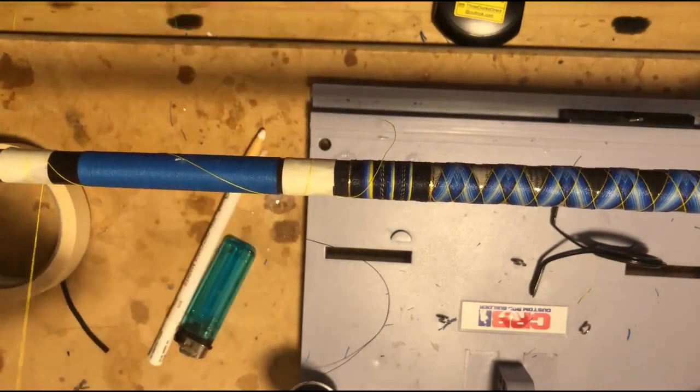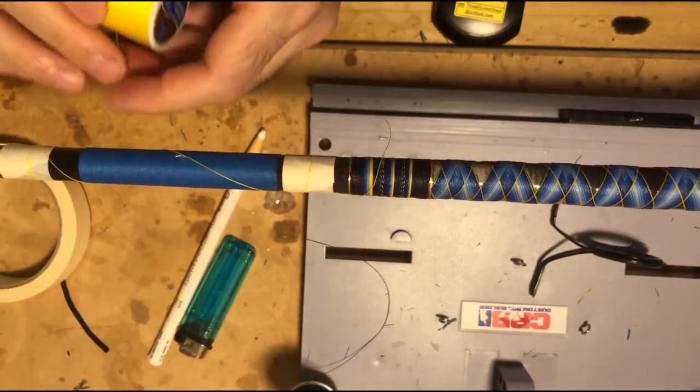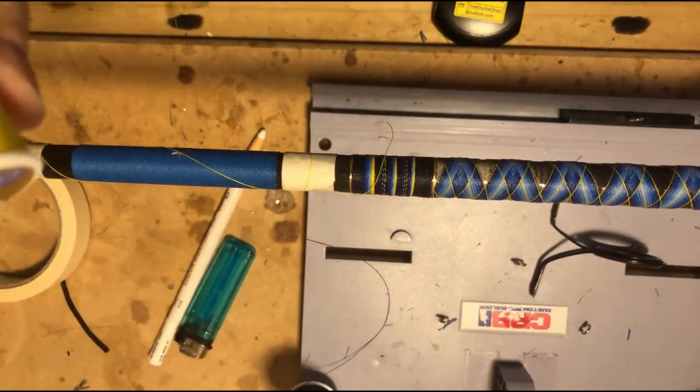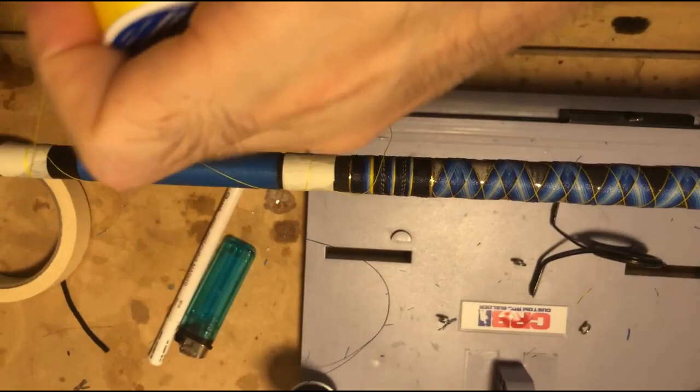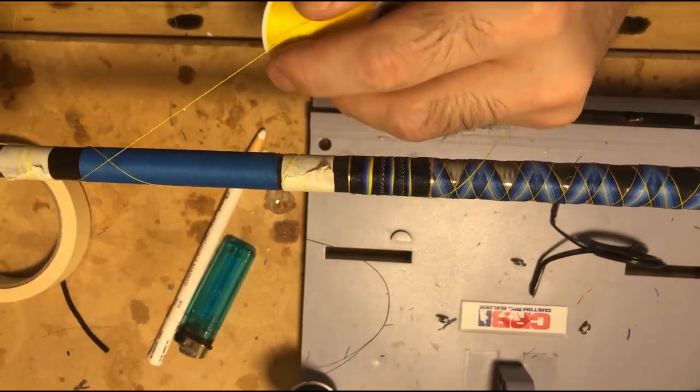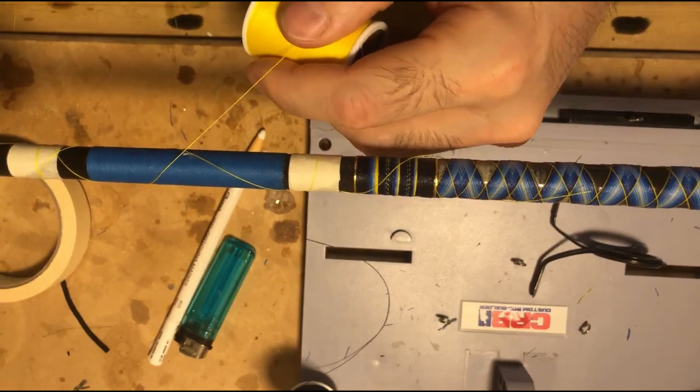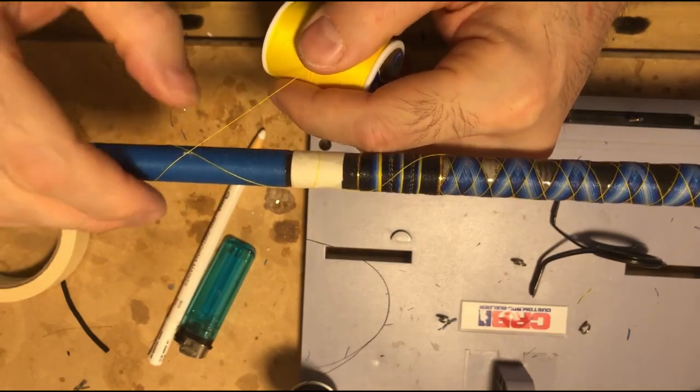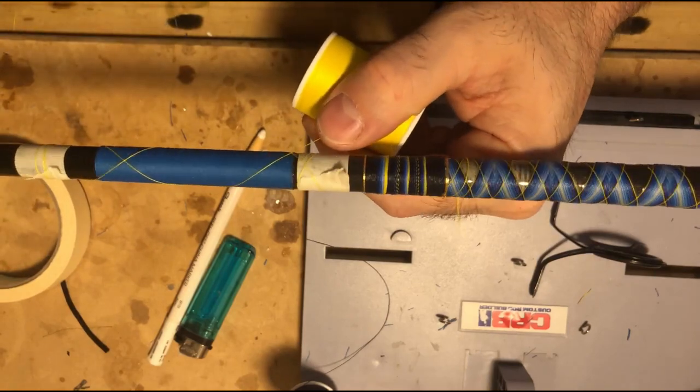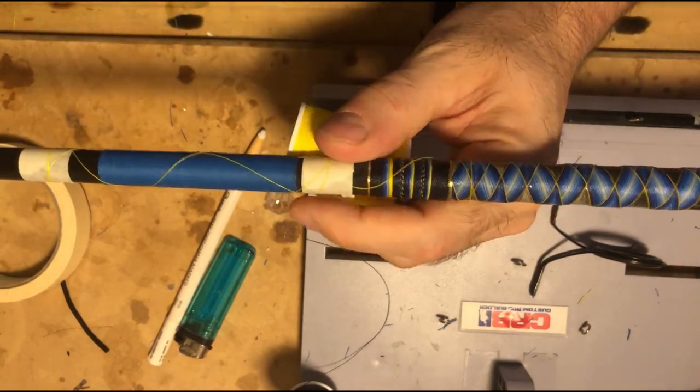I finished up the yellow starting thread and I taped it off and I'm going to cut it so it'll be out of the way when I start off with the first blue. Just doing a quick check to make sure that the cross is in the middle. It's looking pretty decent.